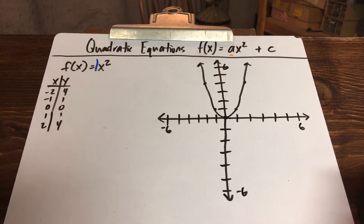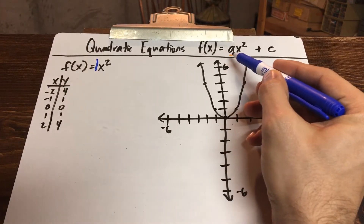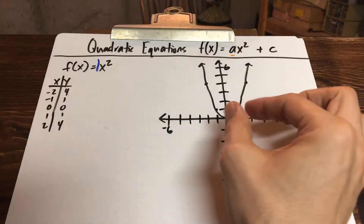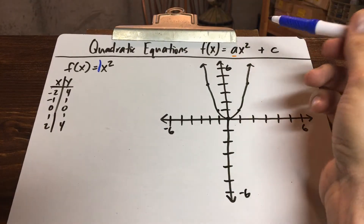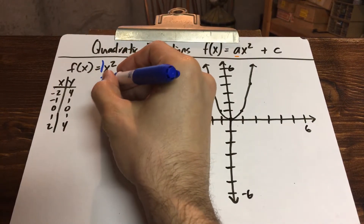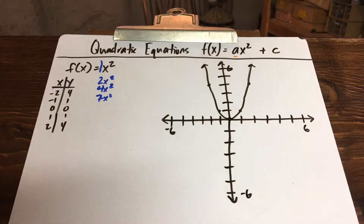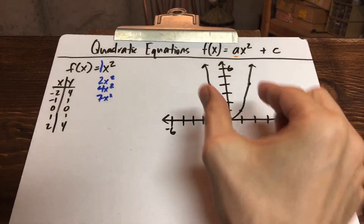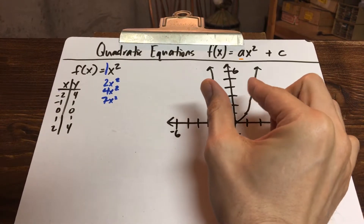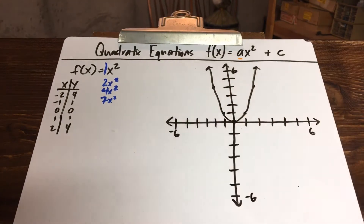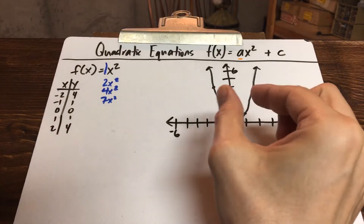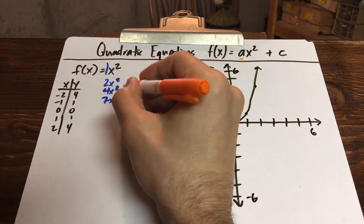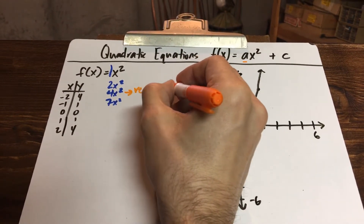In our last video we saw how whenever you change the letter a to a number besides 1, that changes how wide open or narrow the parabola is. When the letter a was bigger than 1 — like 2x squared, 4x squared, 7x squared — that makes the graph more compact, bringing the outside edges closer together. Something like 7x squared would be almost straight up and down. When the letter a is bigger than 1, it makes the graph more narrow — we called this a vertical stretch.